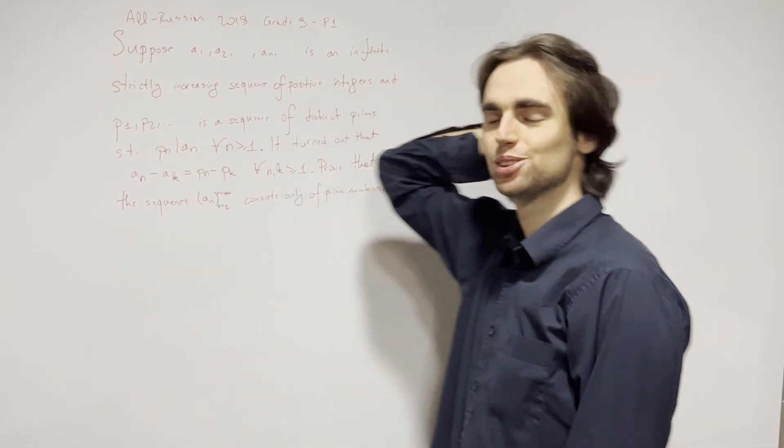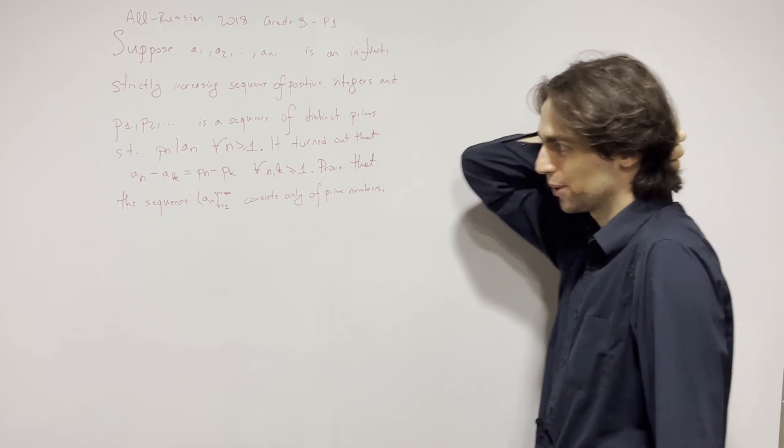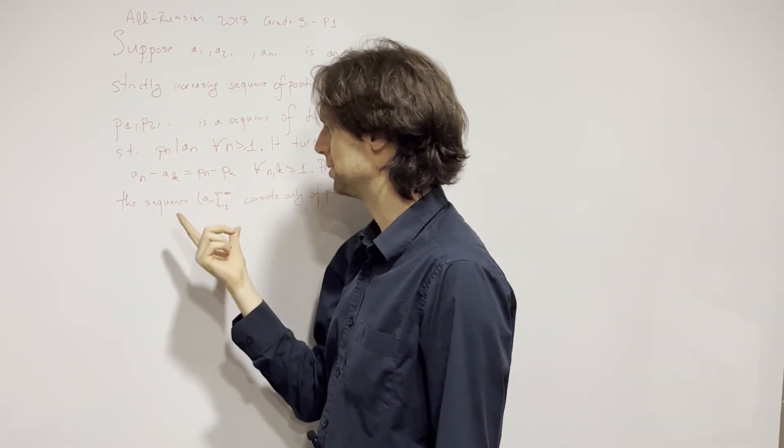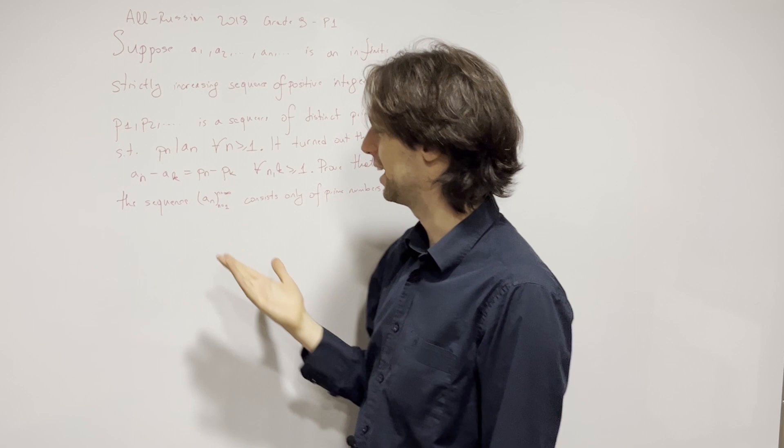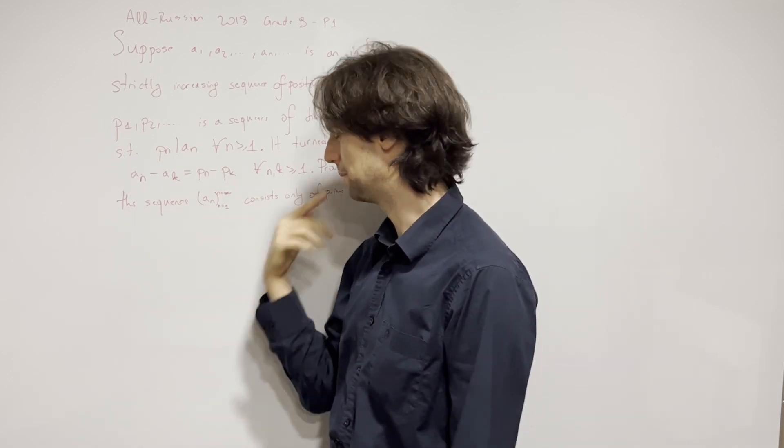Because if a_n is a prime and it's divisible by a prime p_n, then a_n is that prime. So that just tells you this side is going to equal this side: it's going to be equal to p_n minus p_k.